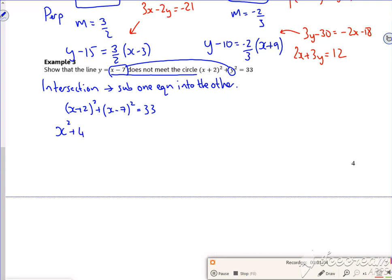So I've got x squared plus four x plus four plus x squared minus 14x plus 49 is equal to 33. And if you can see, we're going to create a quadratic 2x squared minus 10x. I've got a plus four plus 49, so that's plus 53. I'm going to take the 33 over and that'll give me a plus 20.